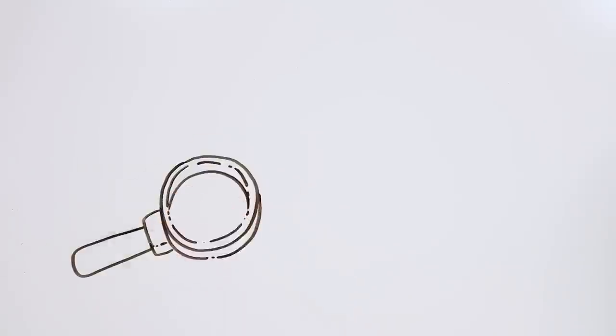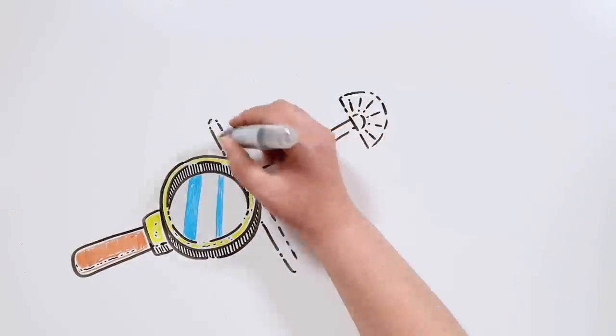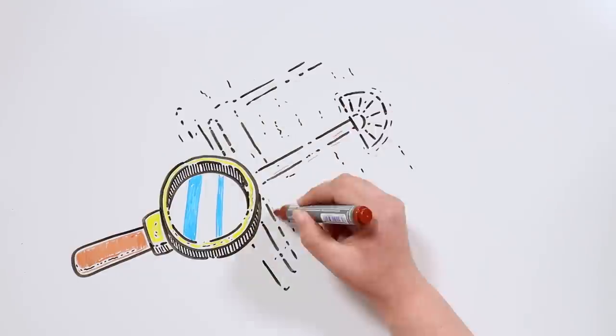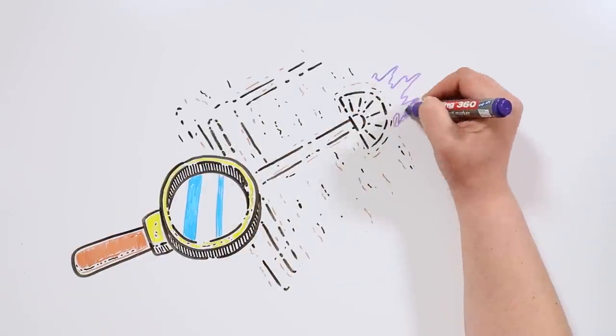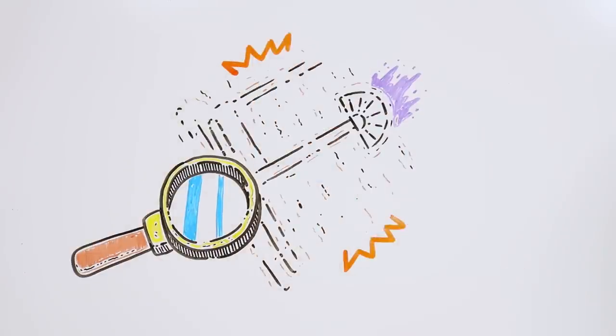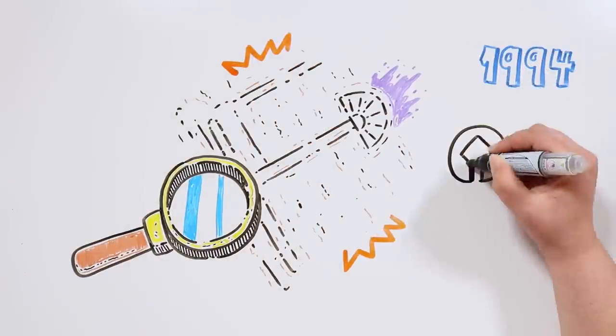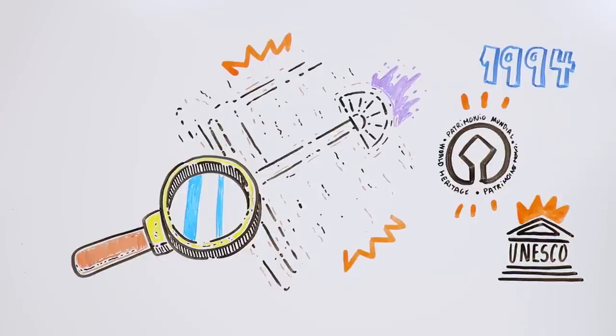Modern research about the Nazca Lines has concluded that they weren't made with a single purpose in mind, but that they are the result of a multitude of different purposes. In any case, the mystery that surrounds the Nazca geoglyphs is part of their charm, and they are considered so important, that in 1994 they were declared a UNESCO World Heritage Site.